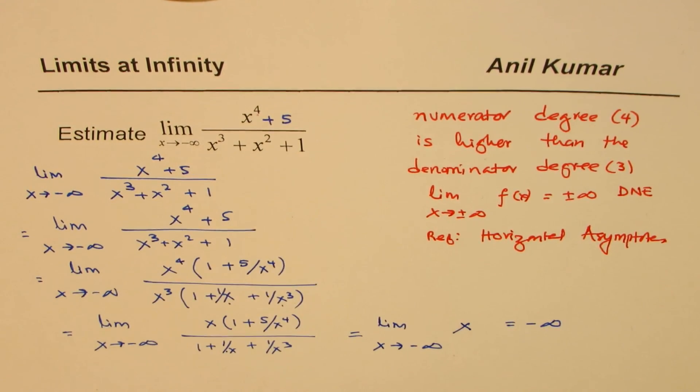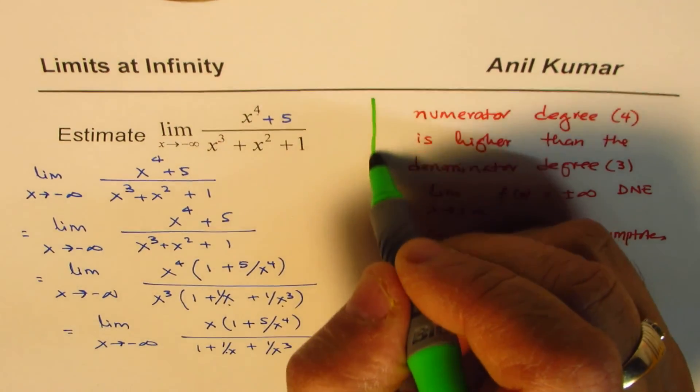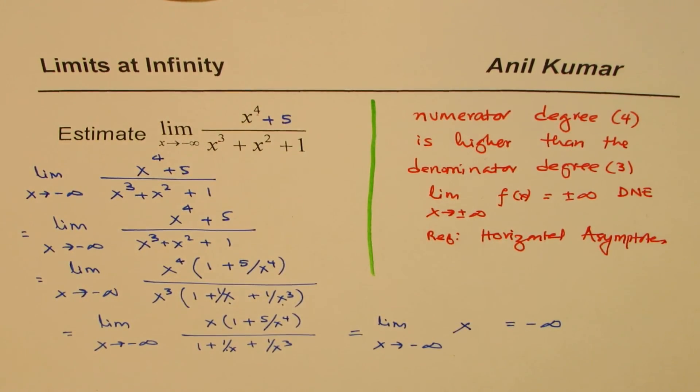So we also find limits approaching to infinity, positive or negative, to sketch the graph and to see if there is a horizontal asymptote or not. So that's an important application. And that's why I've given you this reference on the side. So you may use it soon. That's the whole idea.